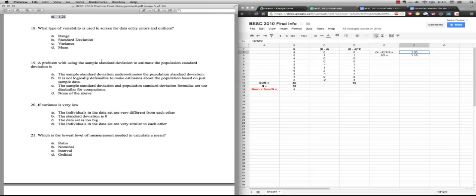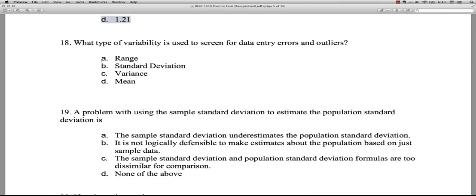Okay, I'm going to make the test a little bigger here. All right, what type of variability is used to screen for data entry errors and outliers? Well, truthfully, I run frequencies to do this or I do a histogram, but one effective way of doing this is with the range because that's A. That is the one that is most affected by the outliers. If you have extremely high or low scores, it'll show up in the range.